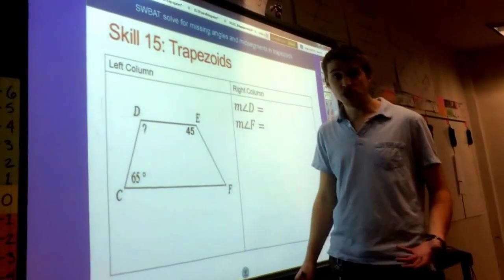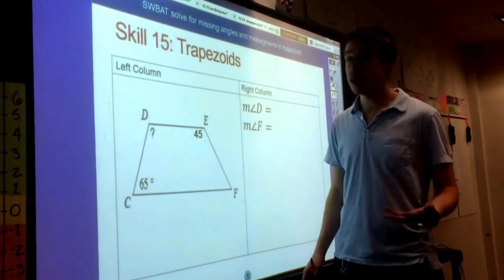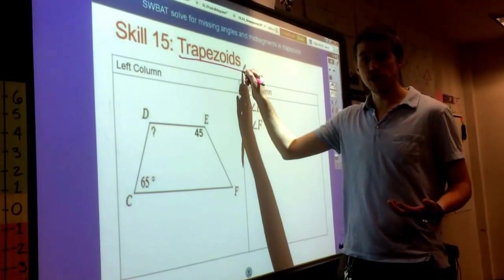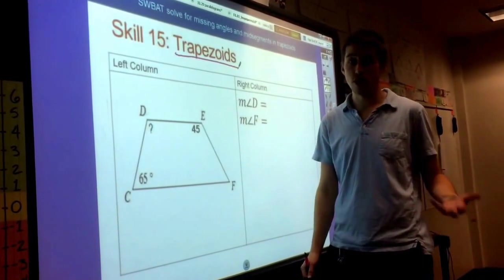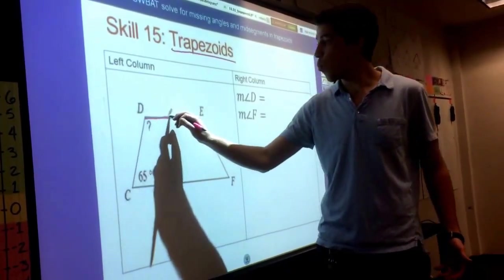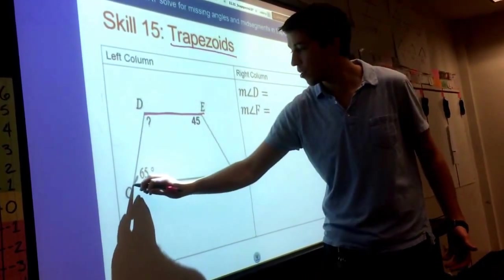So the last quadrilateral, a shape with four sides that we're going to learn in this unit, are about trapezoids. And the thing that makes trapezoids different from all those other parallelograms we've learned about is that this shape only has one set of parallel lines.